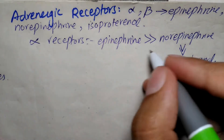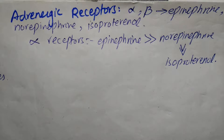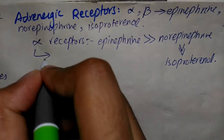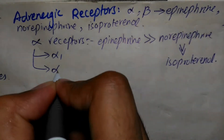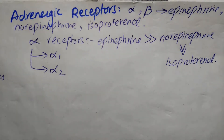The order of potency and affinity of adrenergic agonists for alpha receptors is: epinephrine ≥ norepinephrine >> isoproterenol. The alpha adrenoceptors are subdivided into two subgroups — alpha 1 and alpha 2 — based upon their affinity for alpha agonists and blocking agents.